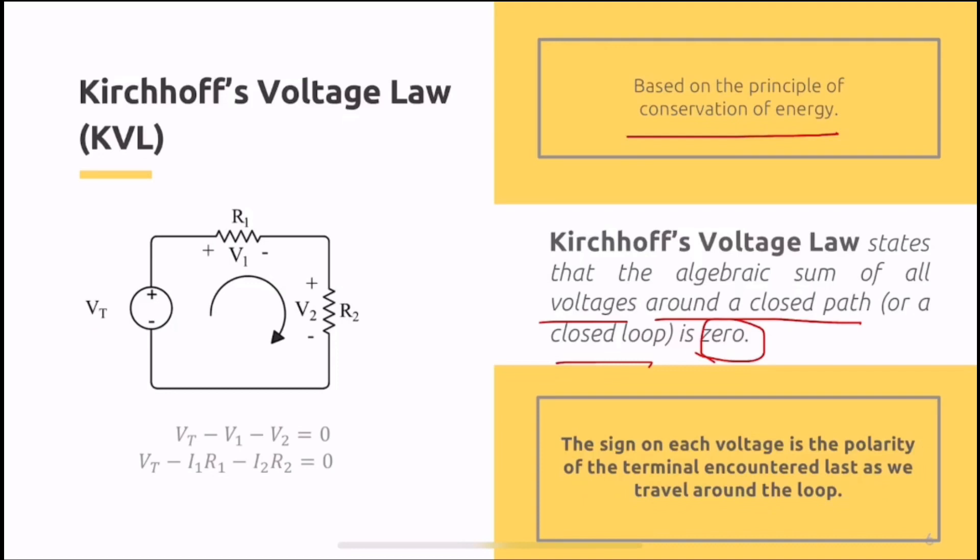The sign on each voltage is the polarity of the terminal encountered last as we travel around the loop. To make it easier to understand, if you look at the simple loop circuit on the left, you have one loop circuit with three components. You have an active component here, a voltage source, and two passive components, resistances. These three components have voltages. The voltage source has a voltage supply, and the passive components have voltage drops. Since they have voltages, the idea is, based on conservation of energy, whatever the VT or supply voltage can supply, if it can supply 10 volts, that means those 10 volts should be accommodated or received by our passive components. Whatever is given should be received by the passive components.